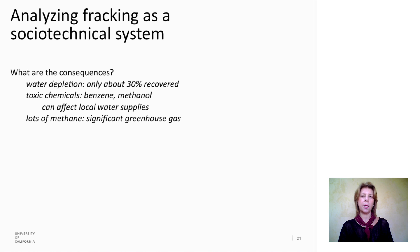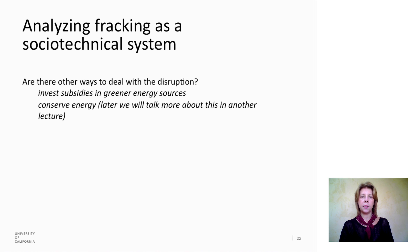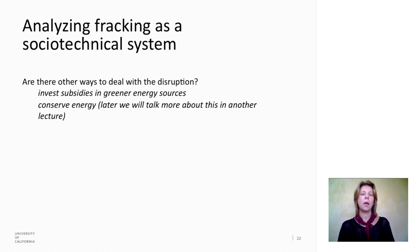The process releases toxic chemicals — benzene and methanol — that can affect local water supplies, as well as methane, a significant greenhouse gas. Are there other ways to deal with these disruptions to local communities and the environment? We could invest those subsidies in greener energy sources, and we could conserve energy. One of the best ways to deal with an energy crisis is not to need the energy in the first place. We'll be talking more in this class about how that might happen.